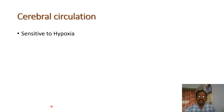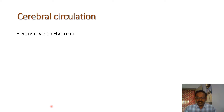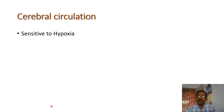The brain is more sensitive to hypoxia. Even if the blood supply to the brain is decreased for more than 15 to 30 seconds, it produces unconsciousness. If the blood supply to the brain is decreased for more than five minutes, it produces irreversible brain damage. The main fuel for the brain is glucose.